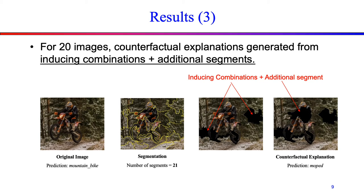In our experiments, out of 50 images, for 20 images, counterfactual explanations were generated from inducing combinations plus additional segments. Out of these 20 images, for 8 images we need to mask one additional segment along with the inducing combination. For 7 images, we need to mask two additional segments, and for the remaining 5 images, we need to mask between 3 to 5 additional segments to produce a counterfactual explanation. Overall, our approach can generate counterfactual explanations for 44 out of 50 seed images. In fact, for 28 of these 44 images, the counterfactual explanation is generated by removing no more than two segments.